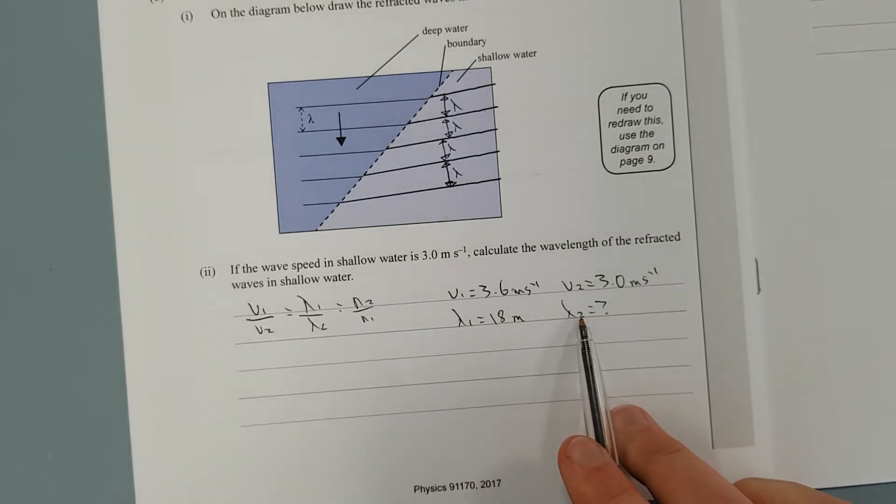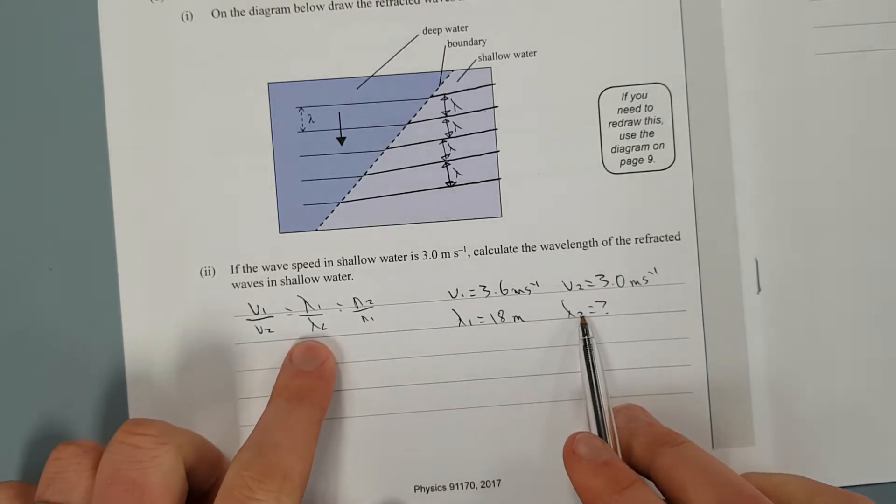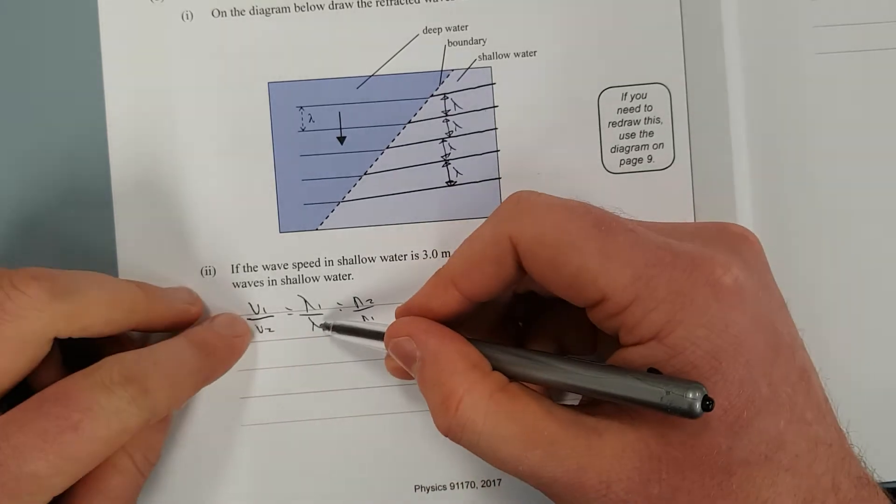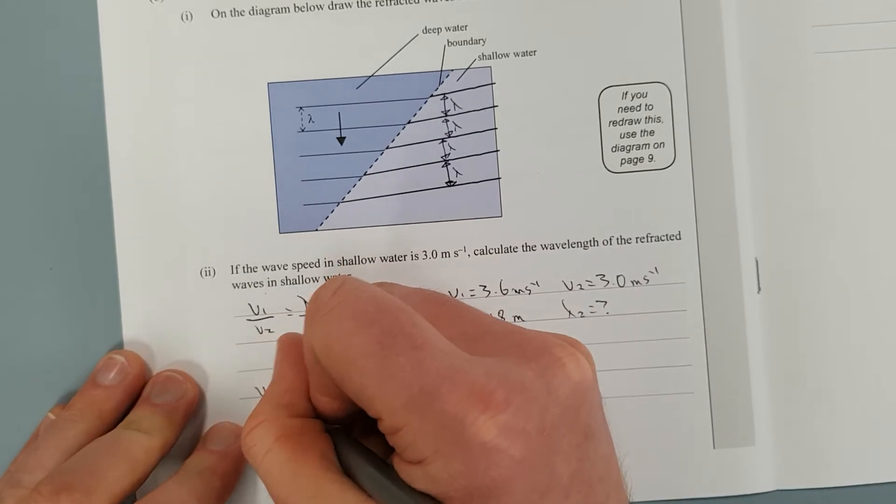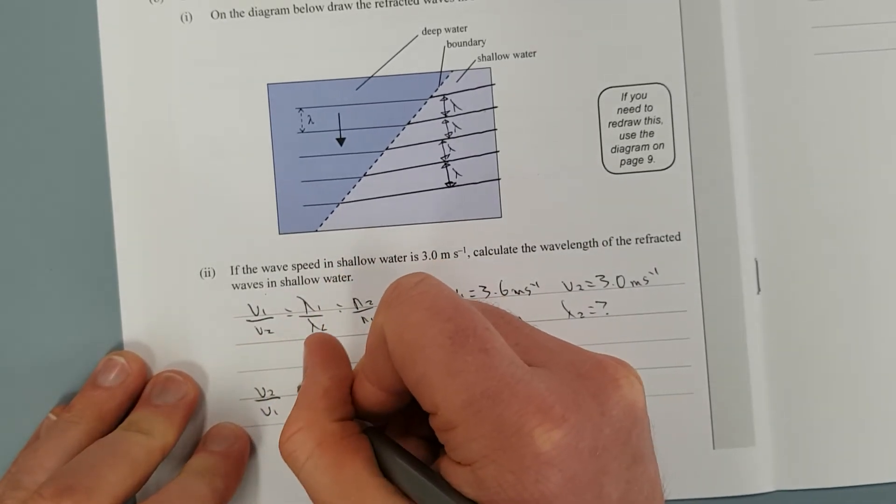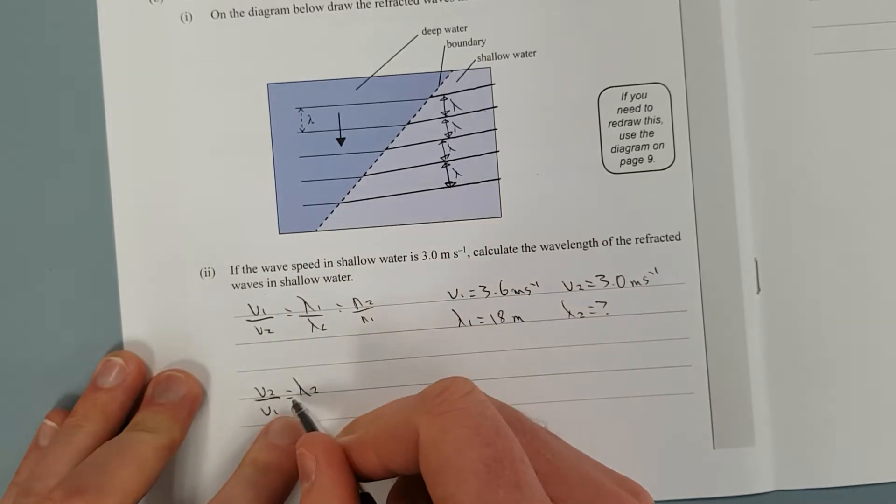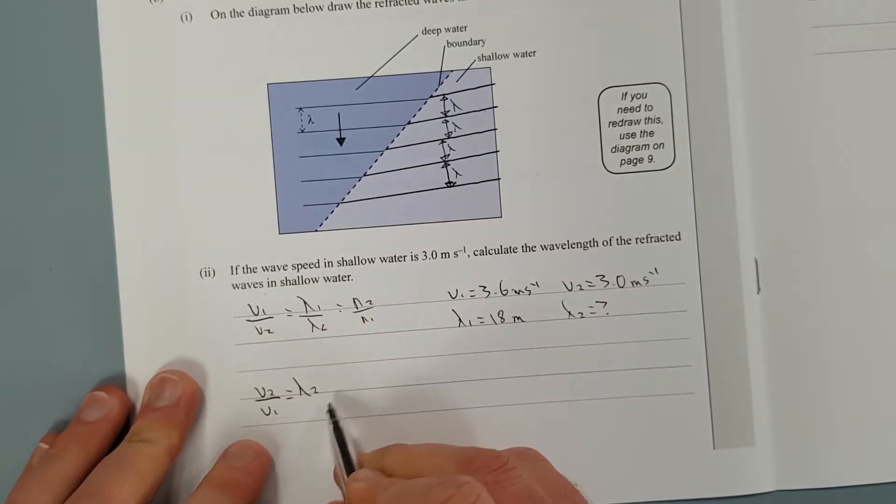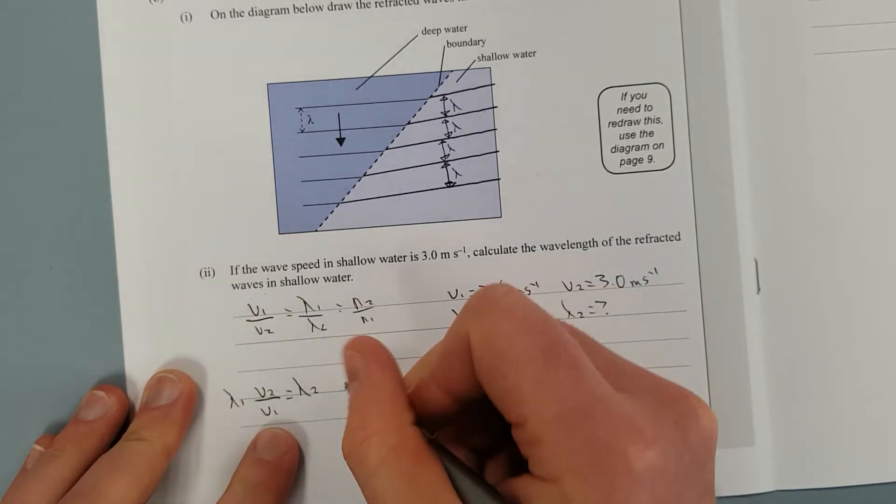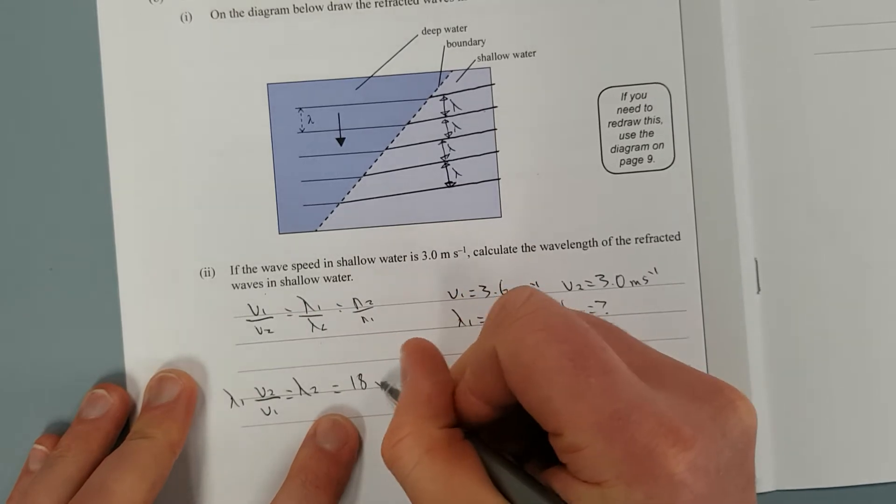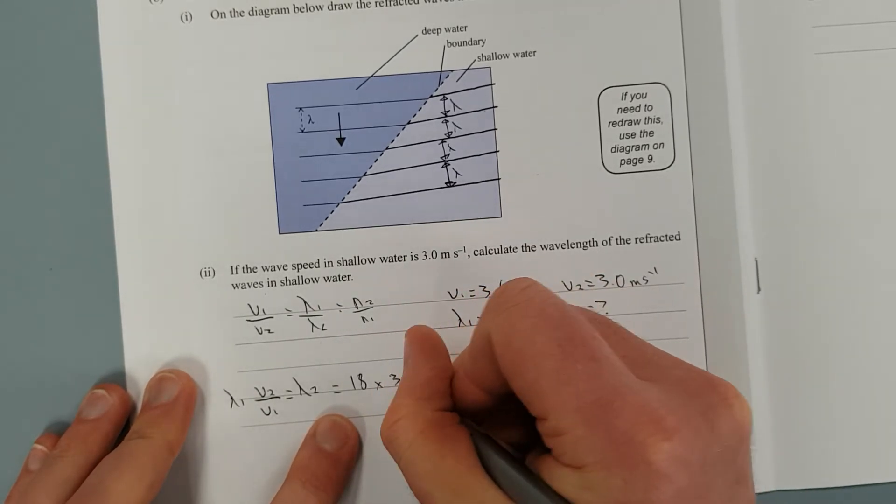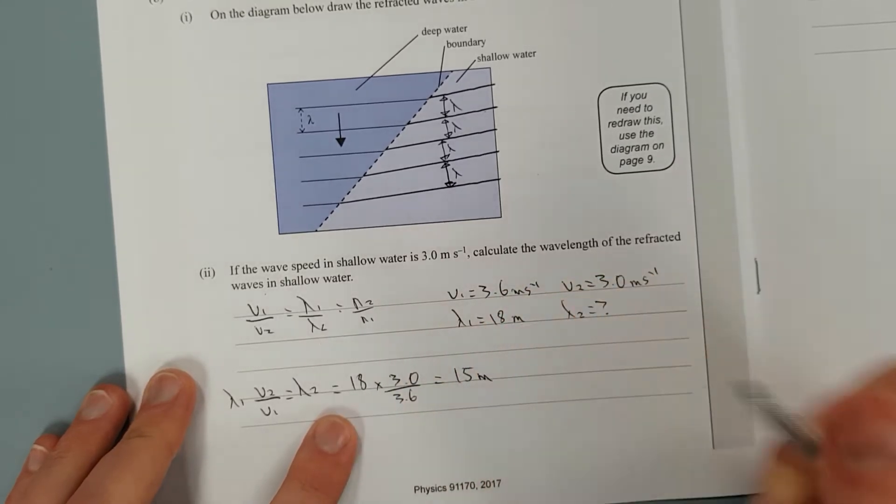So all we need to do is find lambda 2. We shall flip this fraction. We're going to have V2 over V1, lambda 2 over lambda 1. Lambda 2 is equal to, I'm going to times by lambda 1. Easy peasy, lemon squeezy. So it's going to be equal to lambda 1, 18, times V2, 3.0, over 3.6, which is equal to 15 metres. Cool.